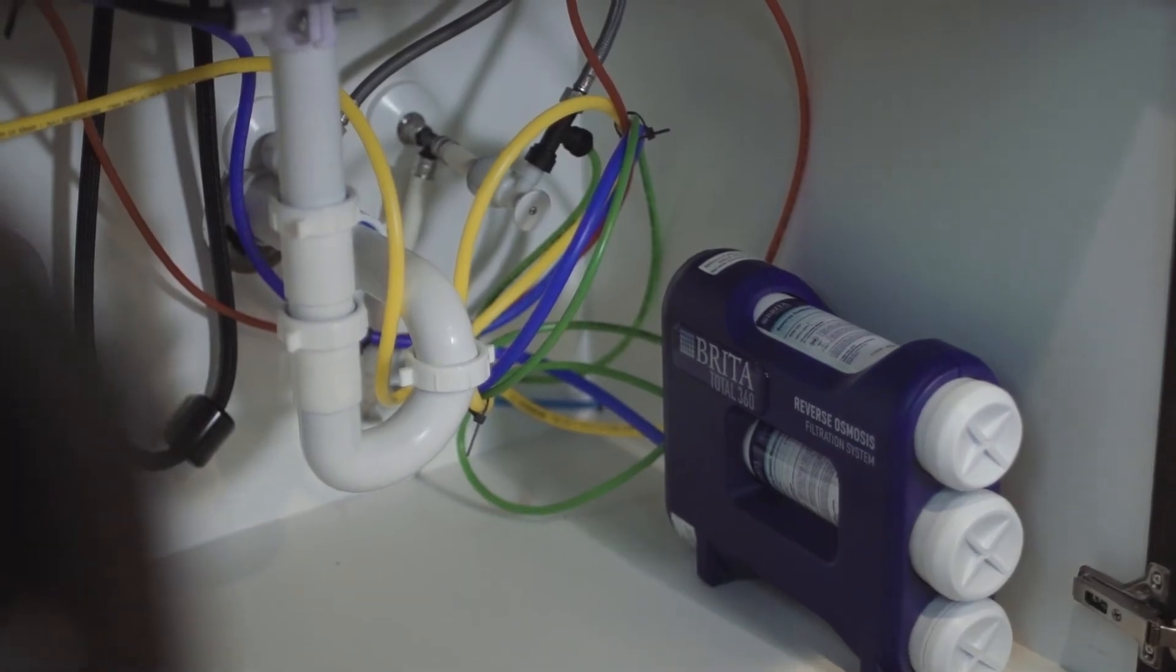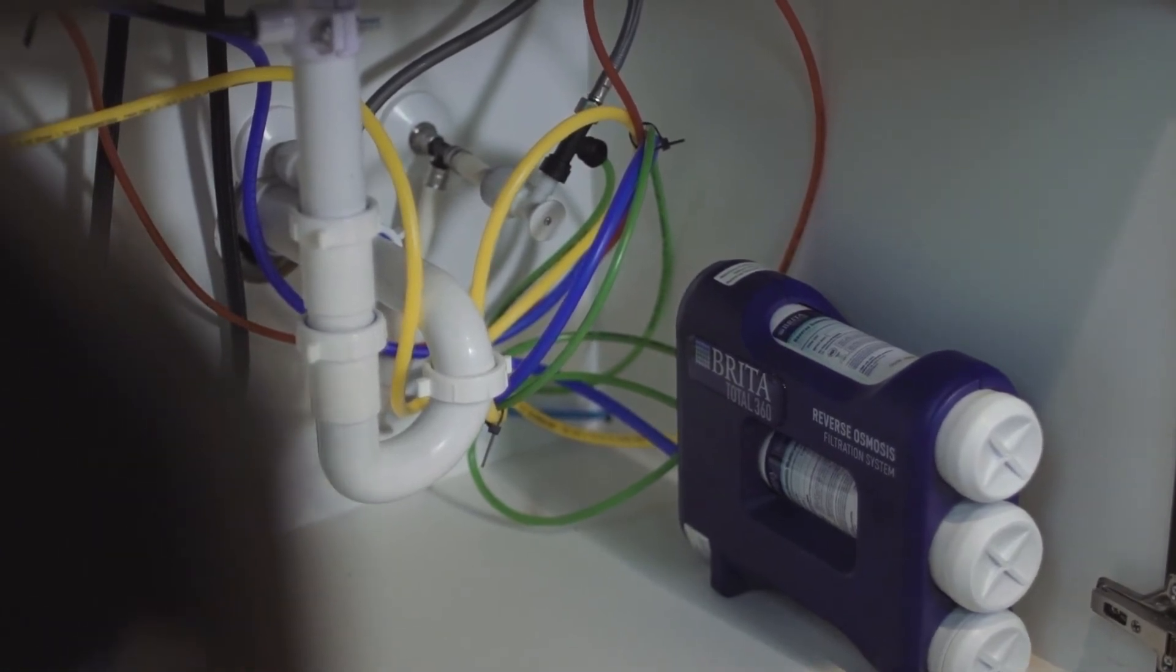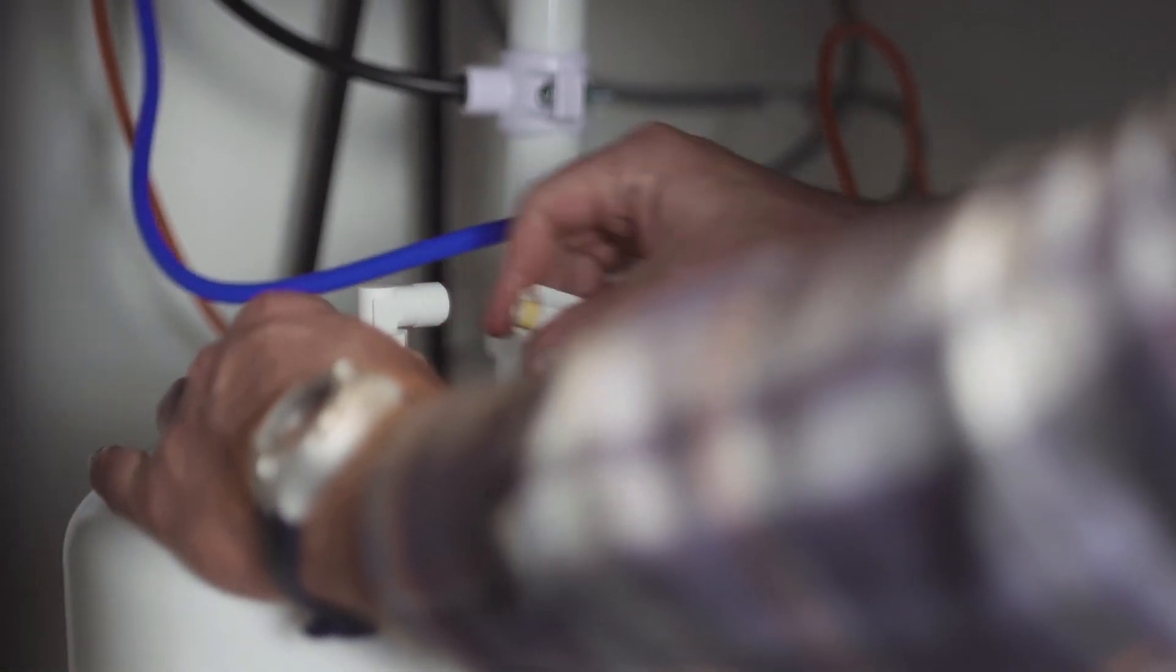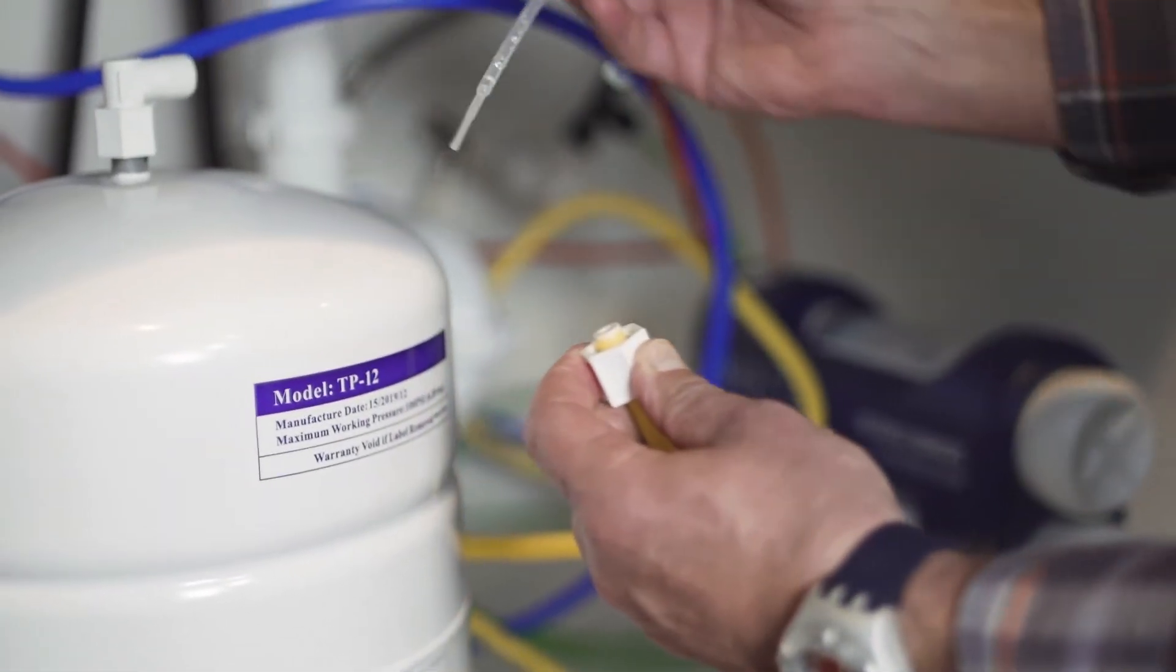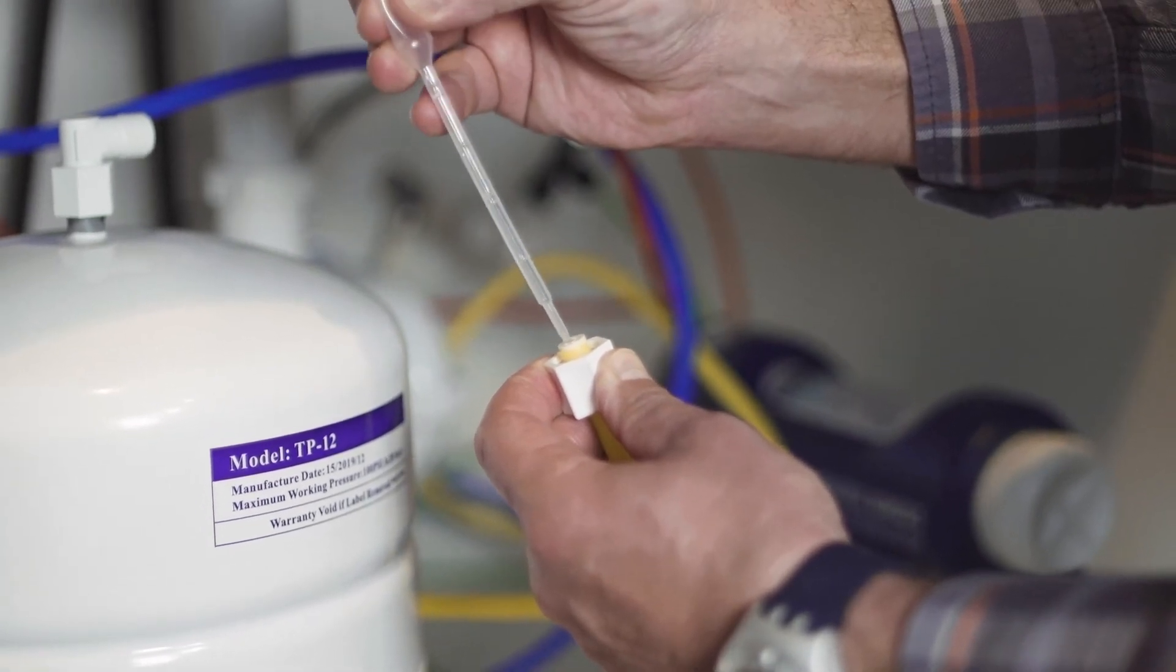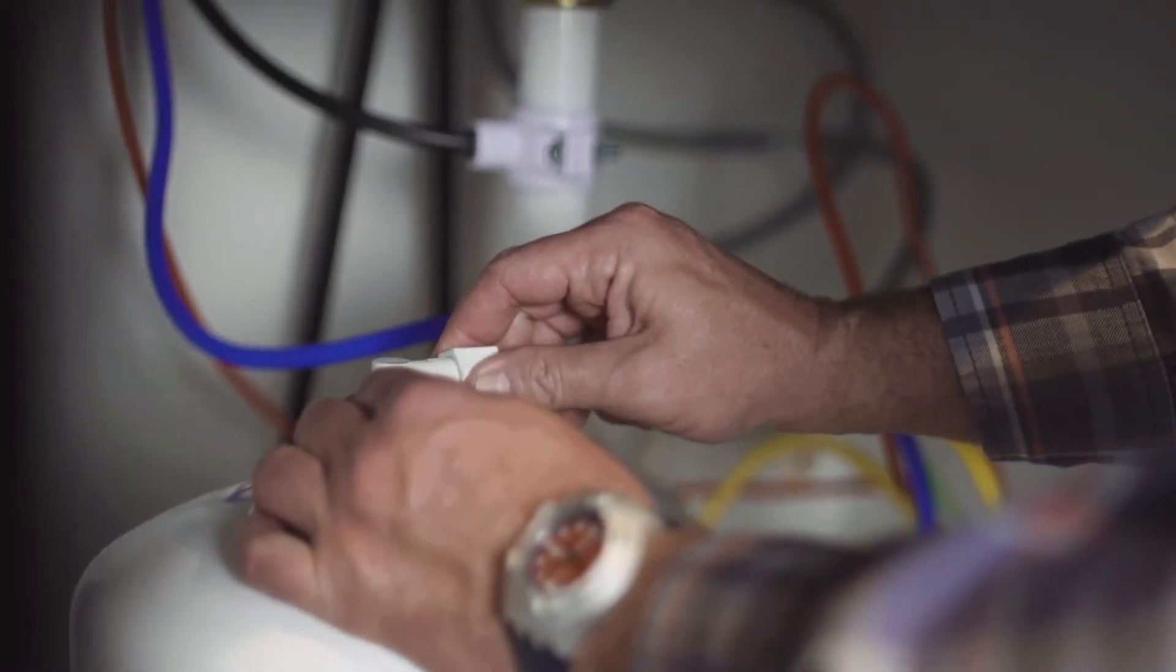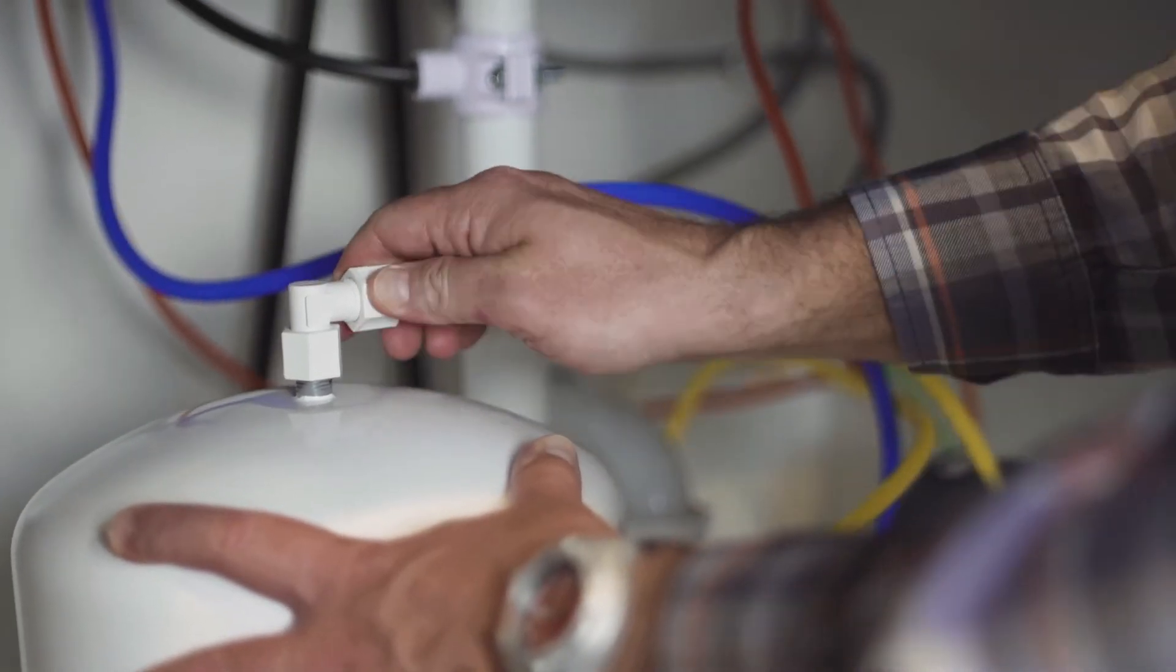Now that your RO system is installed, it's time for its maiden voyage. There are just a few final steps you need to take before you get to enjoy that clean, fresh water. First, you'll need to sanitize the RO system using the included eyedropper and some common household bleach. Before you do this, make sure the water supply is still shut off. Detach the yellow tube from the storage tank and add 3 milliliters of bleach into the tube opening. Reconnect the yellow tube to the tank. The system will be fully sanitized during the pressure test and purging steps.